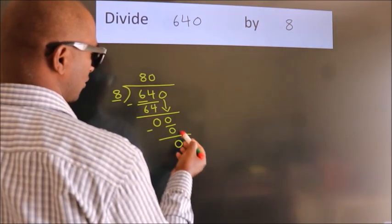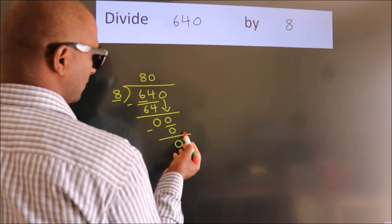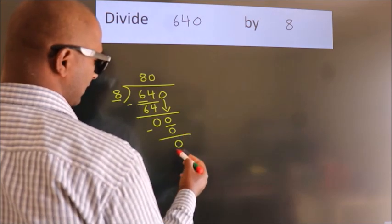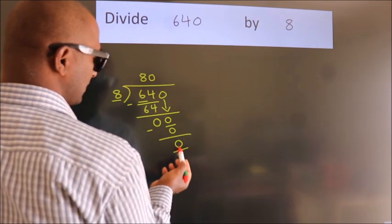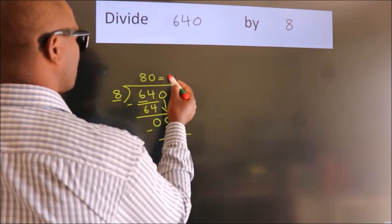After this, there are no more numbers to bring down, and we got a remainder of zero. So this is our quotient.